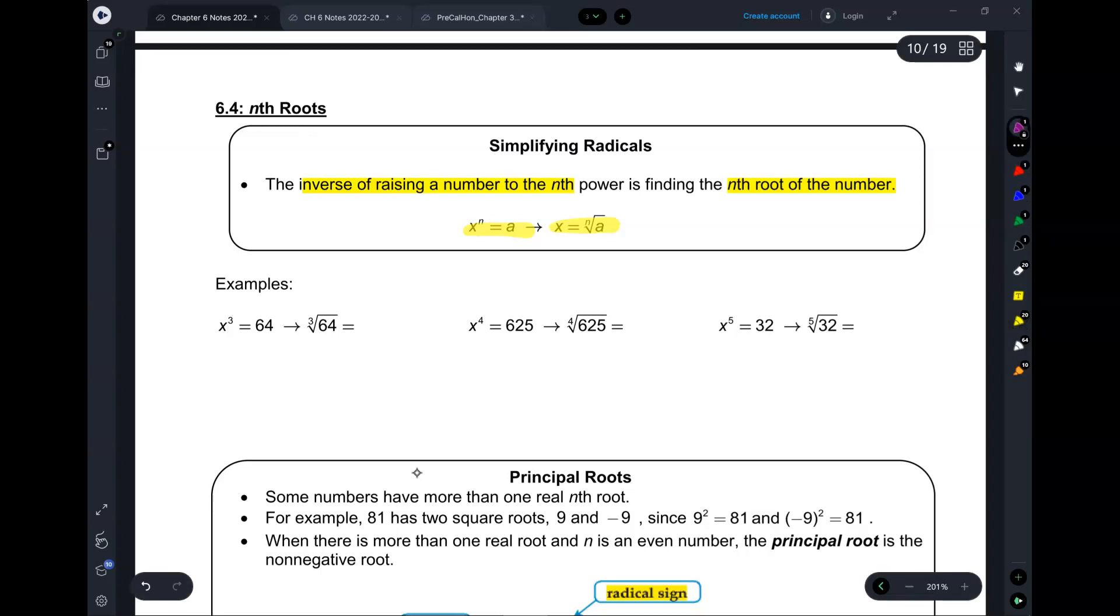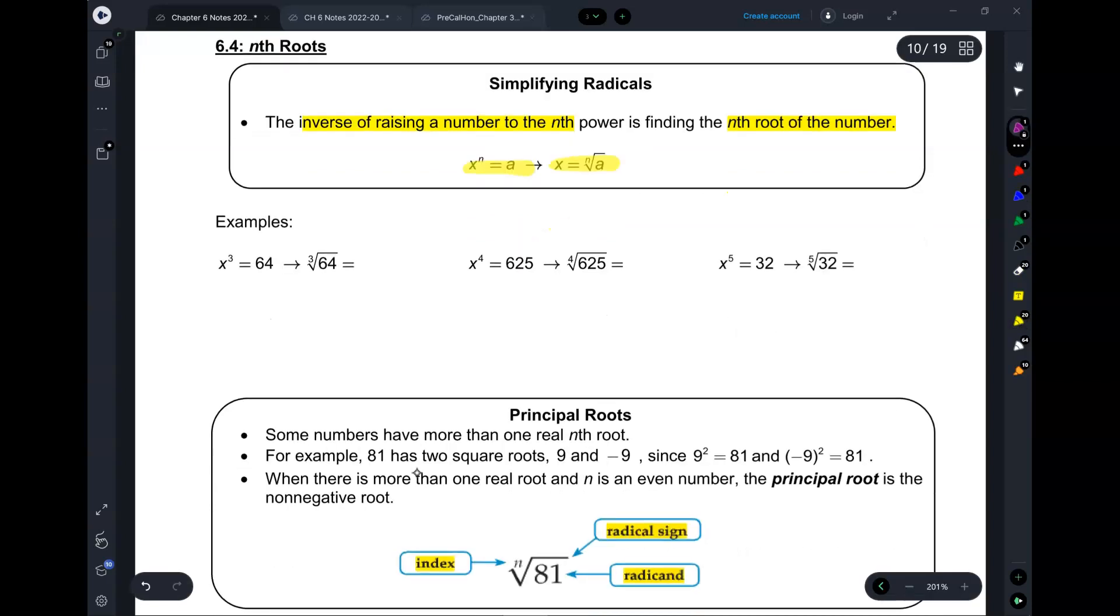So take a look at this one. If you have x cubed equal to 64, and you want to solve for x, the inverse of that, you take the cube root of 64. And basically, when you take a cube root, that's asking you what number, when you multiply it by itself three times, gives you that number. And we know that's 4 times 4 times 4. So this is 4.